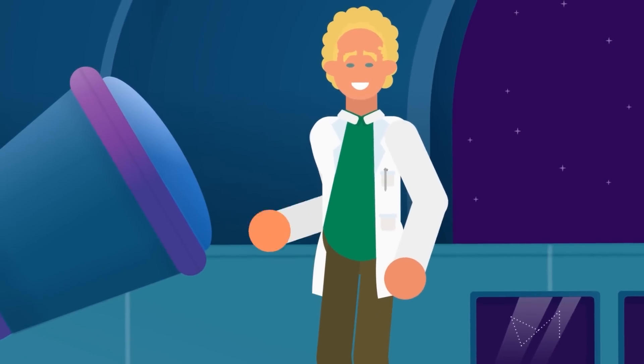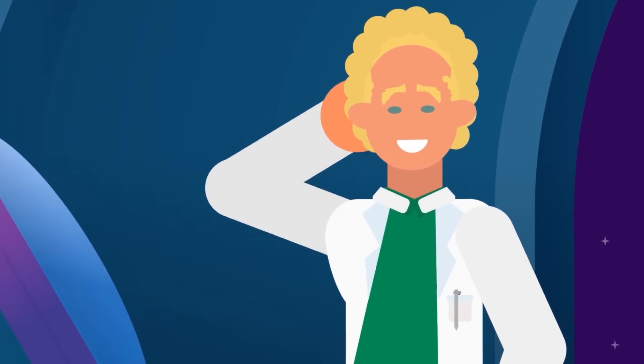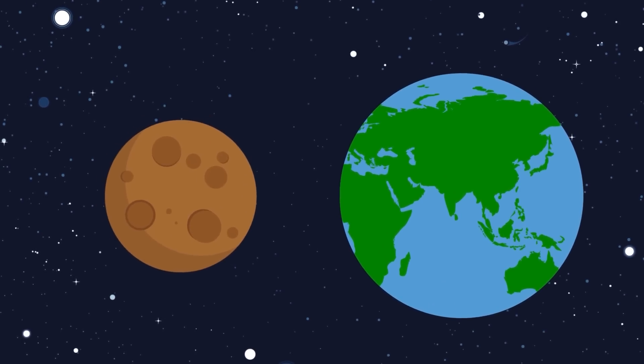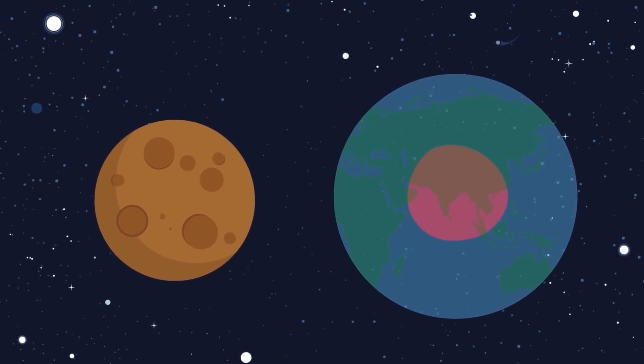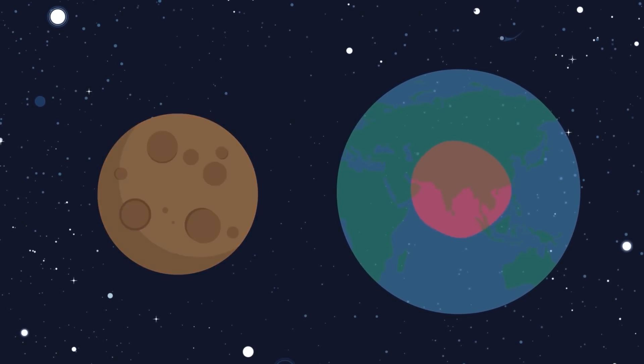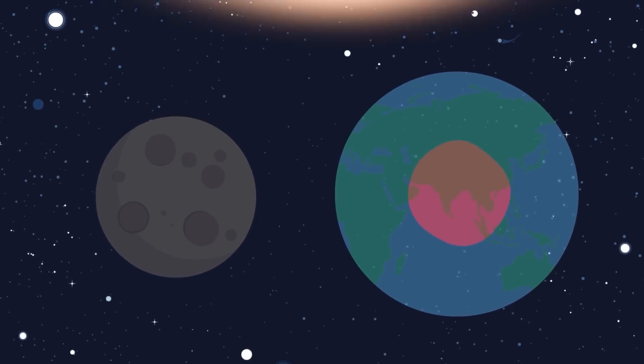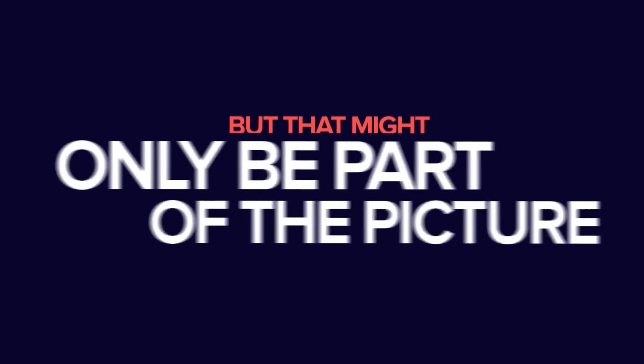Scientists still don't understand why Mars' magnetic field shut down, but they believe it was due to its smaller size compared to Earth, as well as the composition of its core. The Earth is bigger than Mars, almost twice as big, which means that we have a large molten core that would take longer to cool than Mars' own core. But that might only be part of the picture.